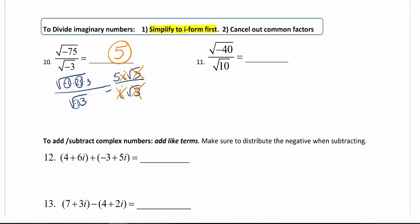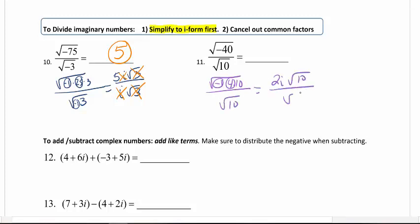You have to pull the imaginary portion out first. For number 11, we have negative 1 which we truly have to pull out first, and then 4 times 10. So I have 2i radical 10 over radical 10. The radical 10's cancel, and I'm left with 2i. If it's underneath the radical and matches, you can cancel using the quotient rule. If it's on the outside and they match, you can cancel by canceling the common factor.